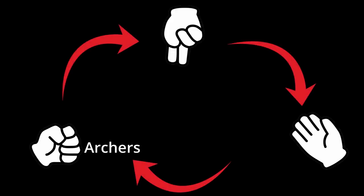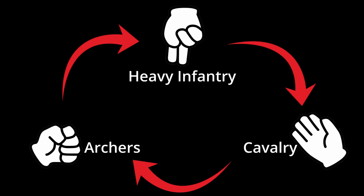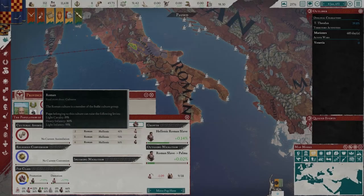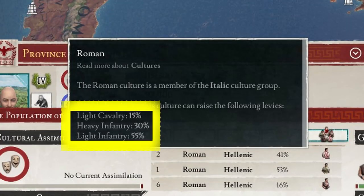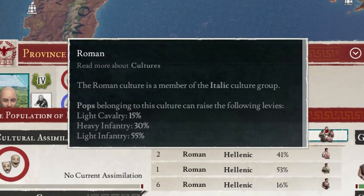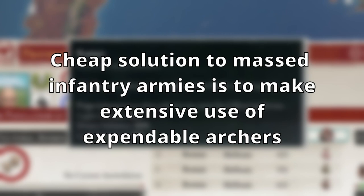Archers fight favorably against heavy infantry, heavy infantry fight well against cavalry, and cavalry deals significant damage to archers. To apply this: if we're going to war against Rome, we can see that Roman levies consist of 85% infantry. If we have lots of archers, it'll give us an edge against their heavy infantry. This doesn't guarantee victory, but it does give us a good foundation.